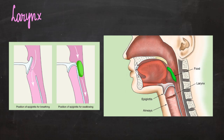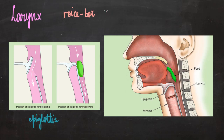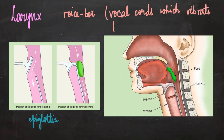This flap is known as the epiglottis. When we are just breathing, the epiglottis is open and air enters the windpipe. When we eat something, the epiglottis closes the windpipe so that food goes directly into the food pipe. Larynx is also known as the voice box; it contains vocal cords which vibrate to produce sound.